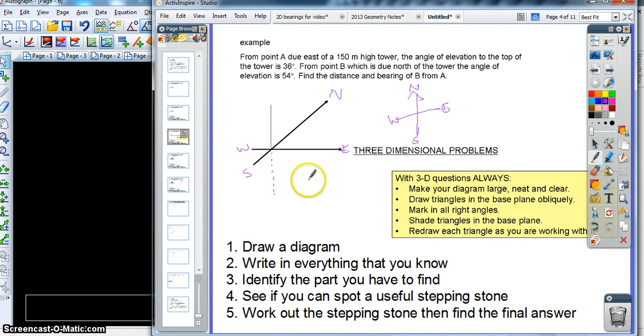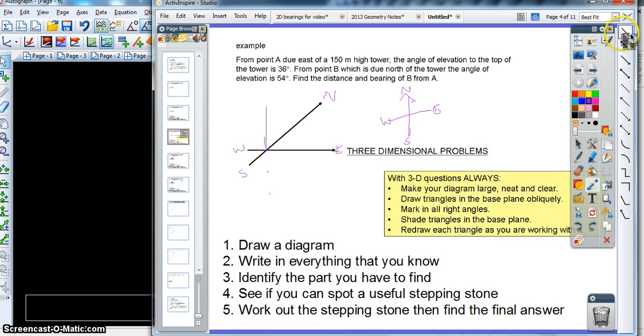Now we're going to put our information in so write in everything that you know. What I'll suggest here, pause the video, try and do it as best you can, and then check back and see if you agree. Alright, so point A is due east of a 150 meter high tower. So our tower here is the bit that goes up from the base here, straight up into the ground, and that is 150 meters. That's the first thing we know.